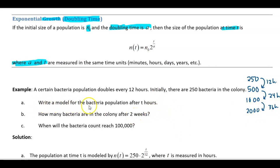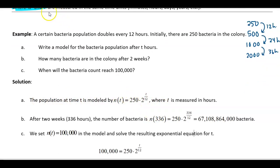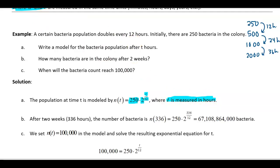Part A: write a model for the bacteria population after t hours. The 250 is your n-sub-zero, your initial amount. The 2 comes from the fact that you're doubling — that's your base of 2. Your t is your variable, and 12 is the amount of time it takes for the quantity to double. Make sure t is measured in hours because your 'a' is in hours — those units must be the same. So that's your general function representing the doubling of the bacteria.